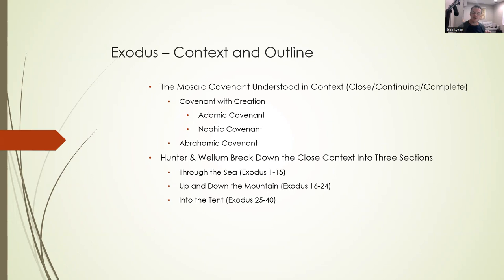Hunter and Wellum break down the close context of Exodus into three sections: Exodus 1 through 15, Exodus 16 through 24, and Exodus 25 through 40. There are a few different ways to outline Exodus, but we're going with Hunter and Wellum's sections. Today we're going to look at the first section — 'Through the Sea,' Exodus 1 through 15 — from the time Moses was born until the parting of the Red Sea.